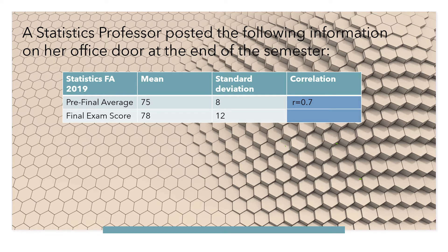Since the pre-final exam is used to predict the value of the final exam score, the exam score will be the y variable and the pre-final exam score will be the x variable. So x-bar is 75, y-bar is 78, the standard deviation of the pre-final exam will be sx, and the standard deviation of the final exam will be sy.